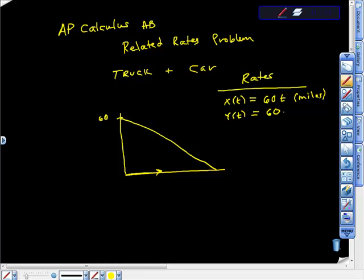We're also given some other rates. We know that the rate of speed that the car is traveling is 60 miles per hour. We know that the rate of speed that the truck is traveling is equal to 40 miles per hour.